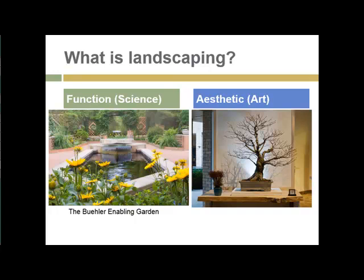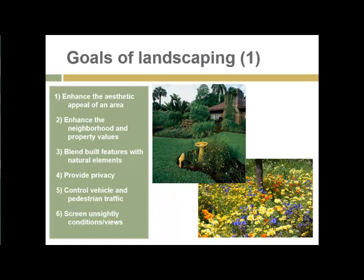We'll get into these in a little bit, but the function is to use the many positive benefits of plants to increase the value and the way in which the landscape supports the use of a building or a space, while the aesthetic parts are to make it look pleasing, attract interest, and accentuate the taste of the landowner or the owner of the space. So the goals along those lines are to enhance the aesthetic appeal of an area and financially to enhance the neighborhood and property values.